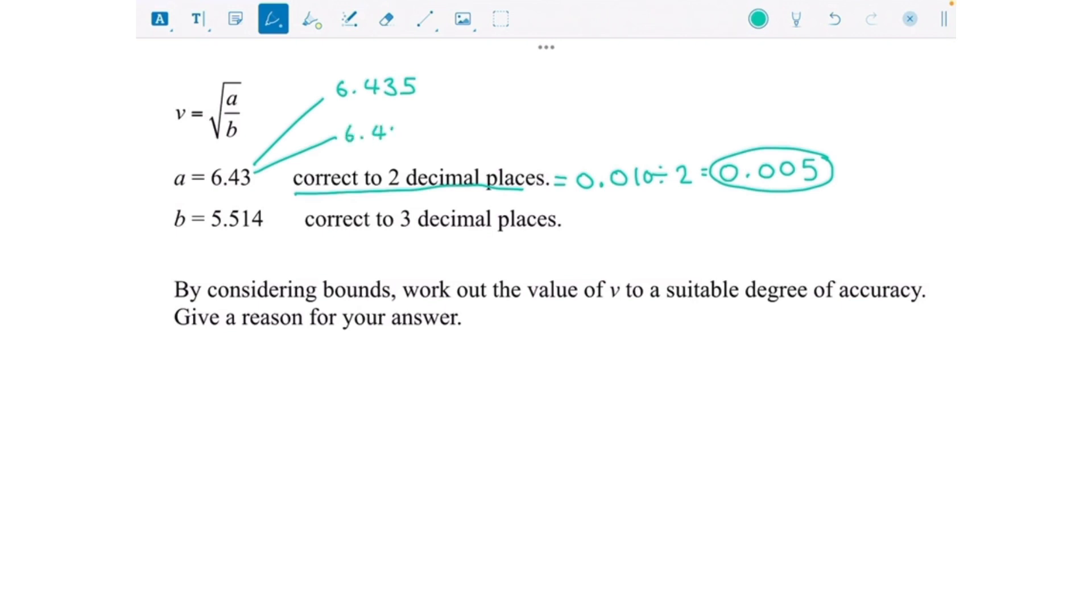The biggest it could have been before is 6.435 and the smallest is 6.425. I know that technically it can't be 6.435 because that would round up to 6.44, but because we can go infinitely close to it, like 6.4349999, we just use this as the upper bound.